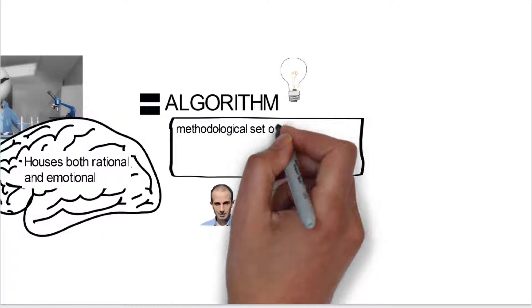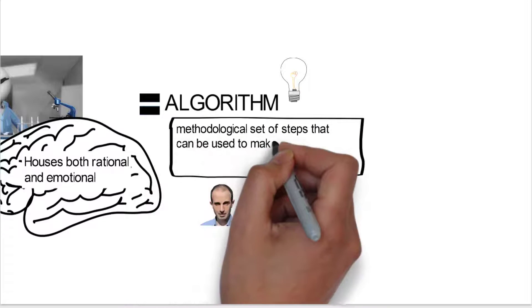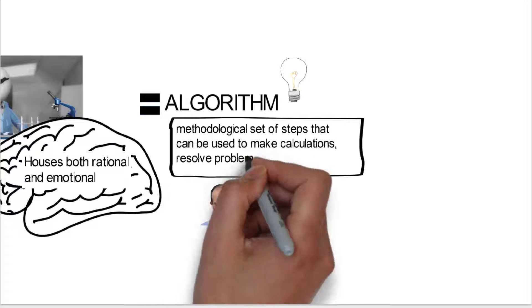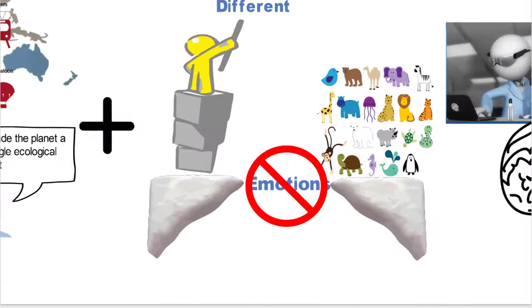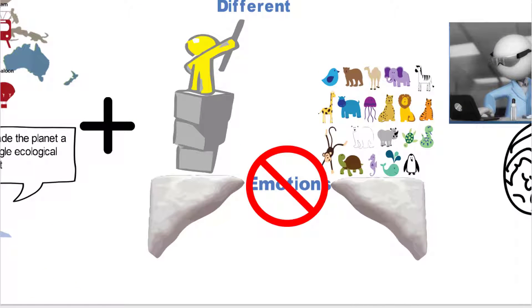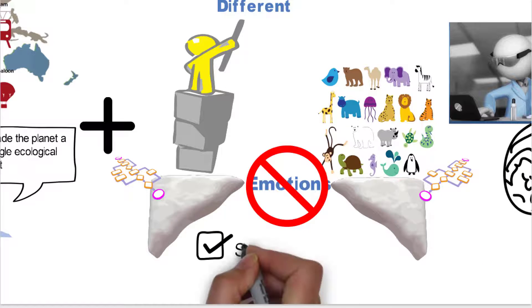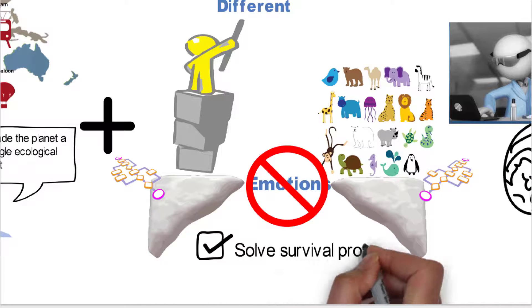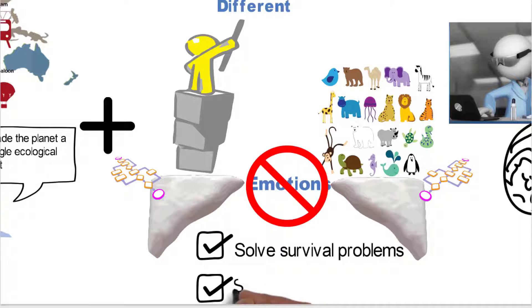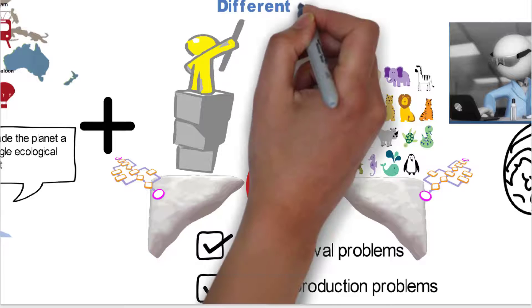Harari defines them as the mythological set of steps that can be used to make calculations, resolve problems, and reach decisions. That's what algorithms are. And these algorithms exist both for the Homo sapiens and also for the animal kingdom. And both of them use that to solve survival problems and reproduction problems. So the emotions are no longer considered the difference.